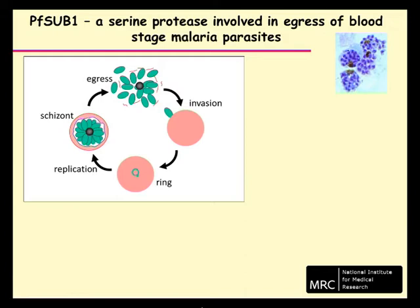Eventually, in a process called egress, the infected red blood cell, called a schizont, ruptures, releasing merozoites to invade a new red cell. Egress is a rapid and highly regulated process, but little is known about how it's triggered and controlled.